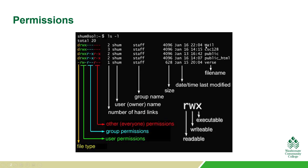This is the file or directory name, and this is the date and time it was last modified. This is the size, and this is the group name that it belongs to — that's going to be pretty important to us. This is the user, who actually created the file or folder. And this is the number of hard links. This area right here is what we're going to focus on — that is our permissions.